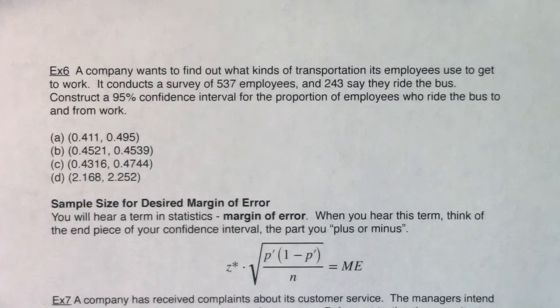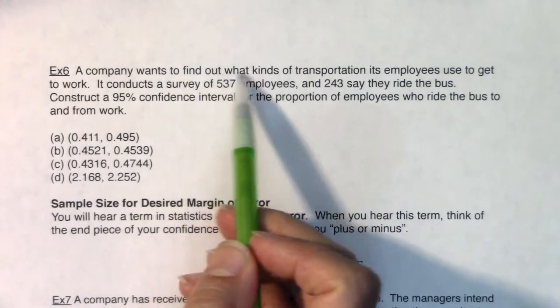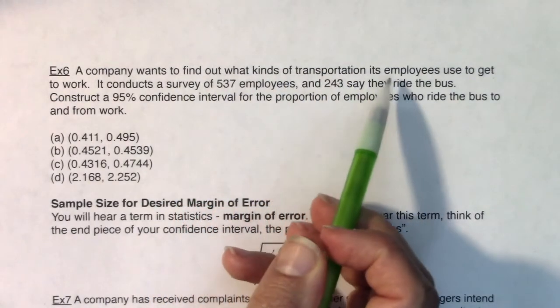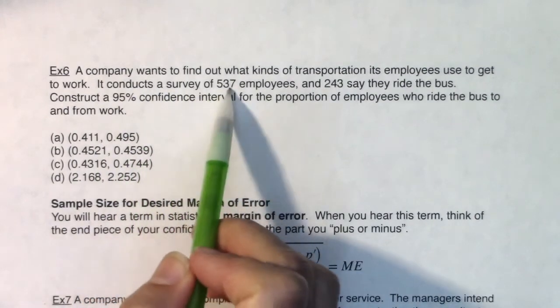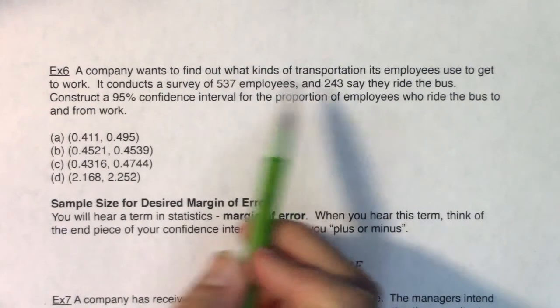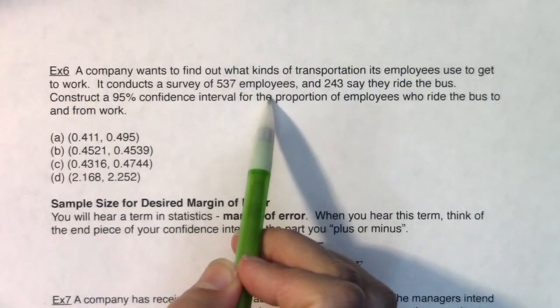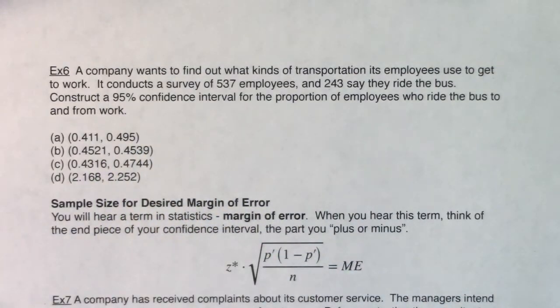Hey, Math 43, welcome to Chapter 8, Example 6. Here we are told we have a company that wants to find out what kinds of transportation its employees use to get to work. It conducts a survey of 537 employees and 243 say they ride the bus. Construct a 95% confidence interval for the proportion of employees who ride the bus to and from work.